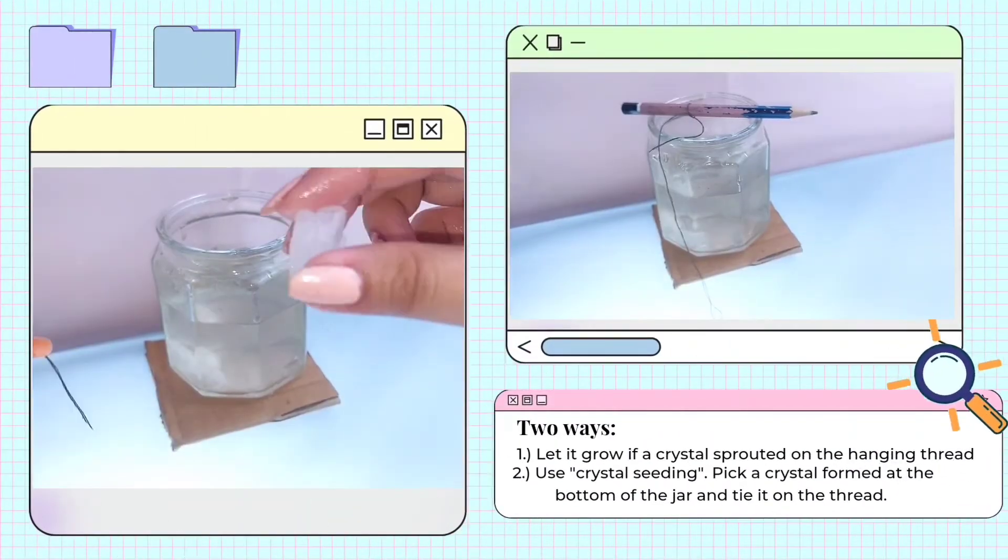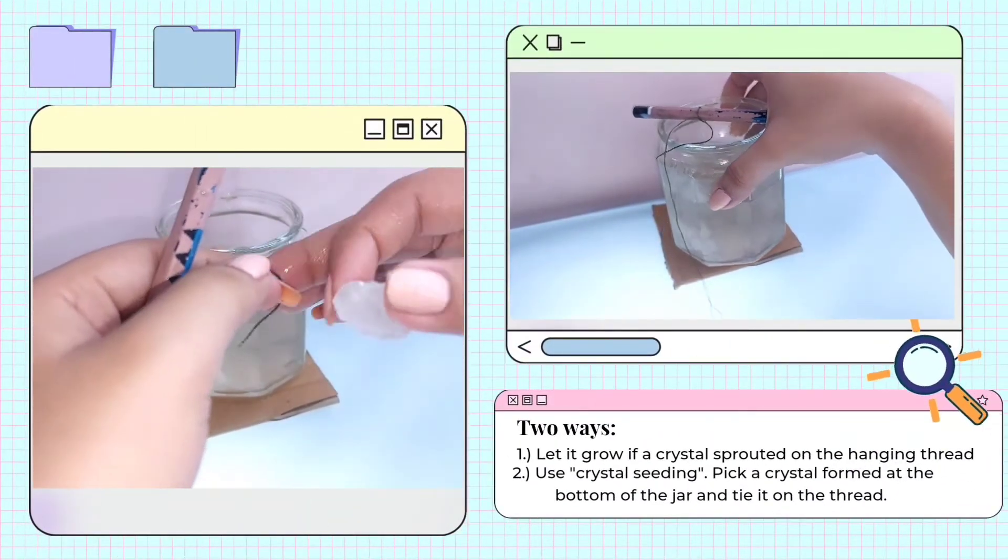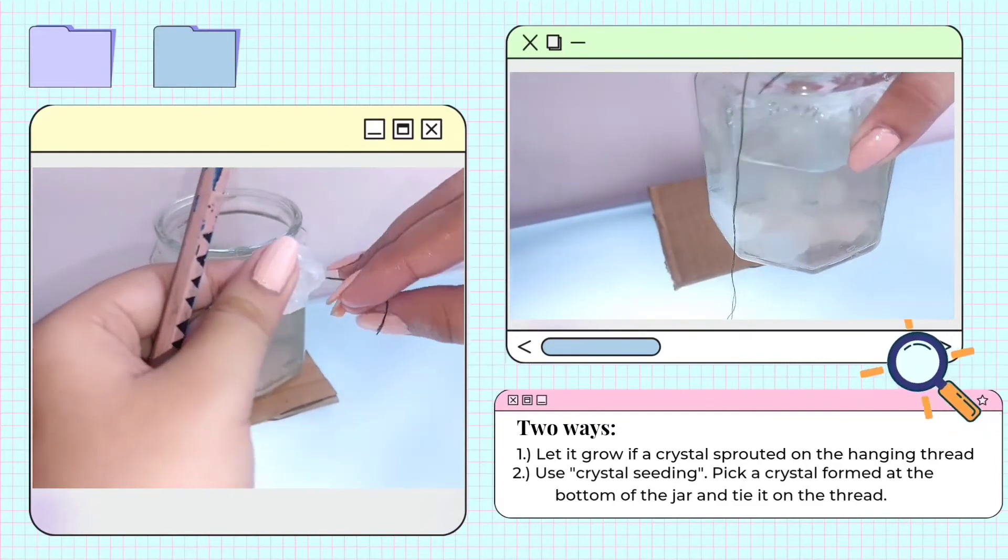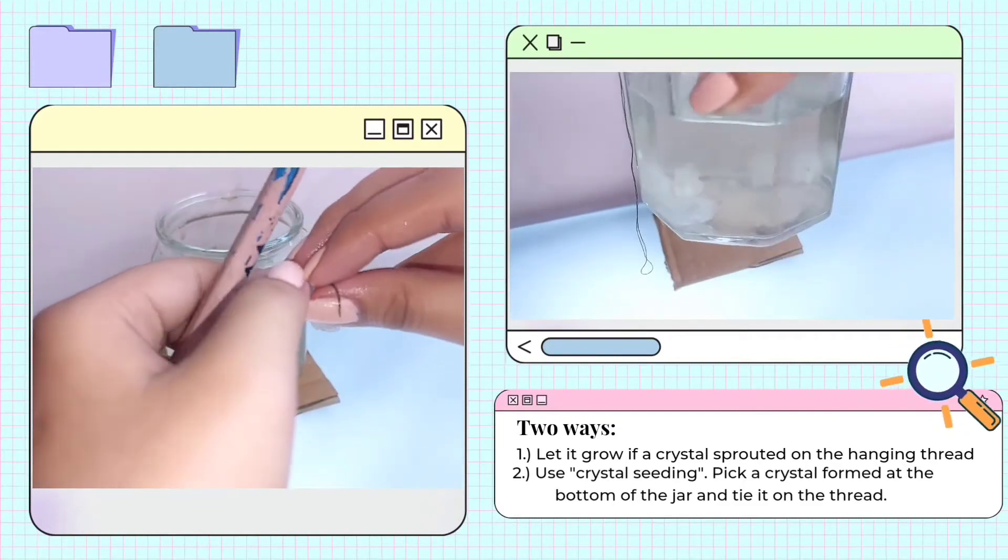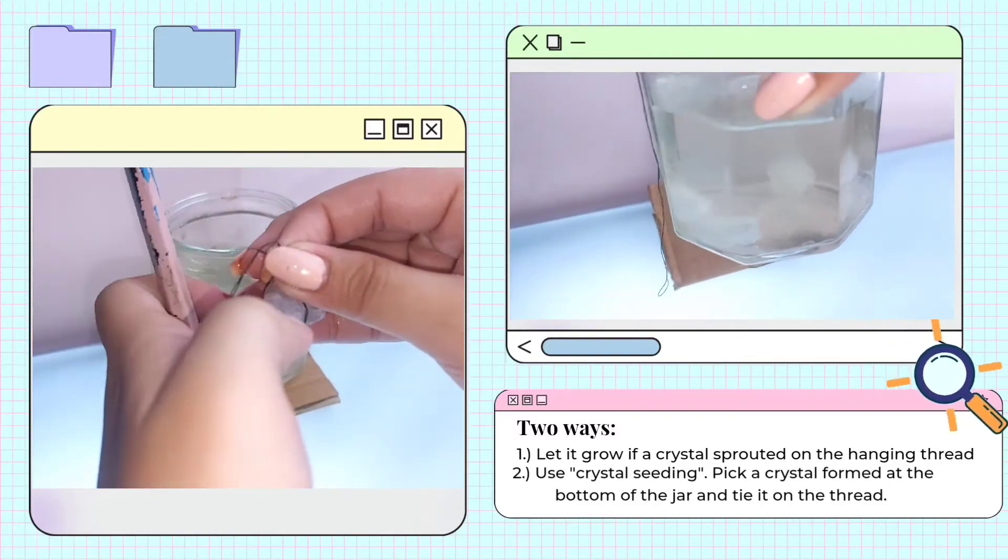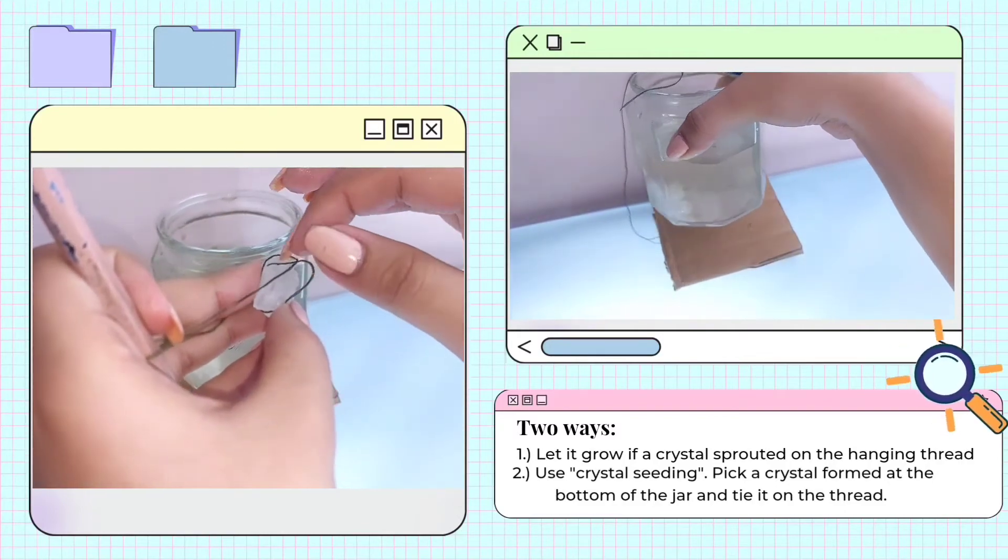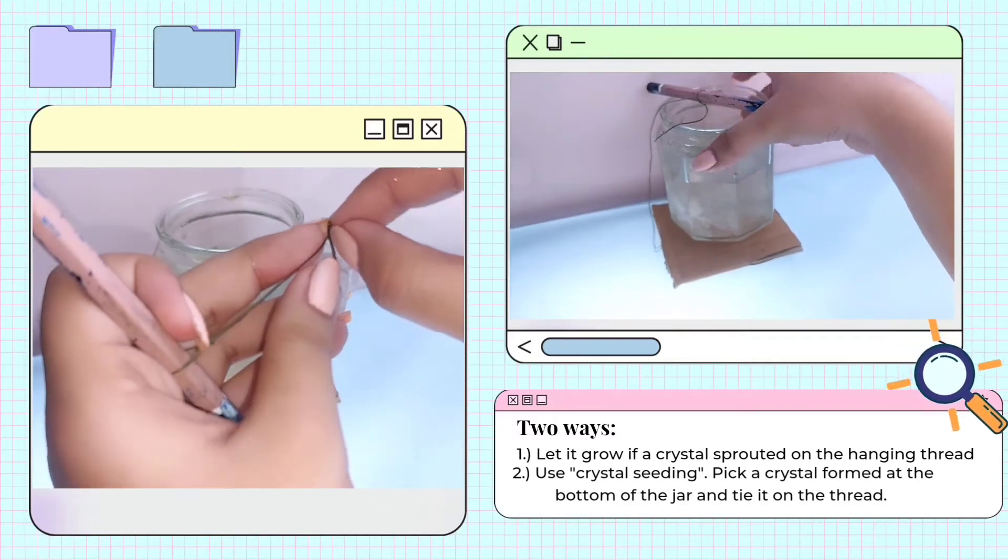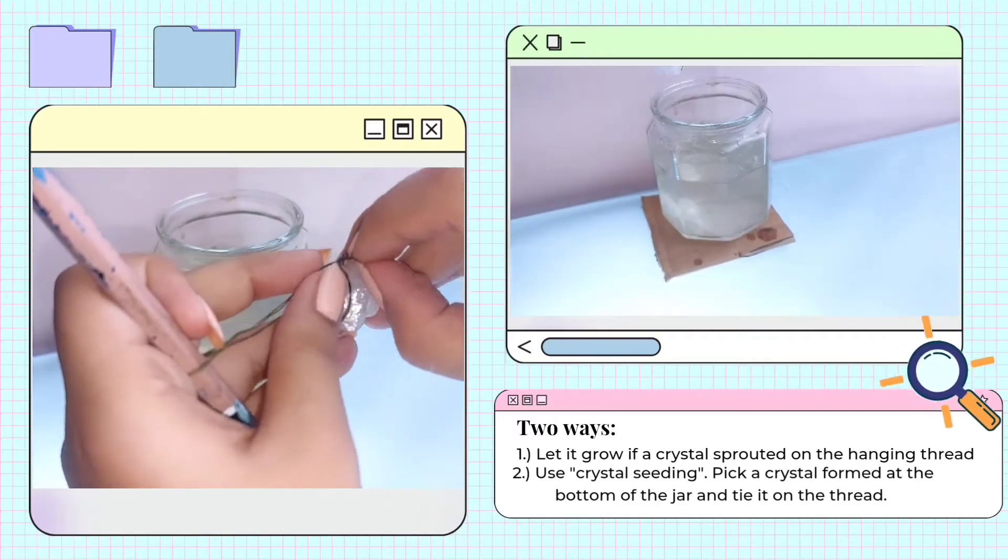If no crystals form on the thread, pick one crystal that has a good appearance from the several crystals that grew on the bottom of the jar. To choose your seed crystal, transfer the solution to a new jar when pouring. Be careful not to spill any crystals in the new jar. The alum solution should be the only thing in the new jar.